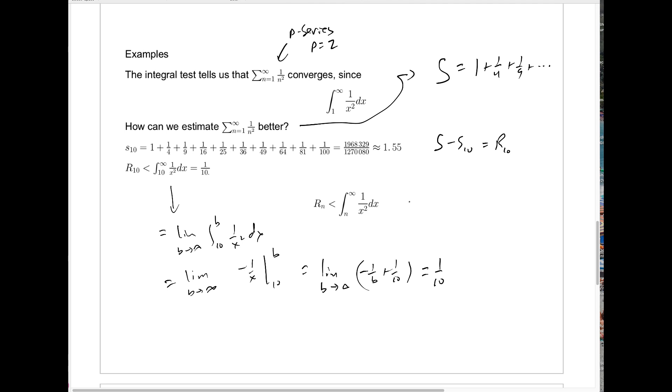So what does that tell us? Because of this estimate, Rn is always less than the integral from n to infinity of 1 over x squared dx, so R sub 10 is less than 1 tenth. That tells me something very good and very definite. Even though I don't know the exact value of this series S, I know that it's approximately 1.55. It's actually bigger than 1.55, but the error is less than 1 tenth, so it's less than 1.65. It's somewhere in that range from 1.55 to 1.65. And even though that might not be a fantastic estimate, it tells us something definite.